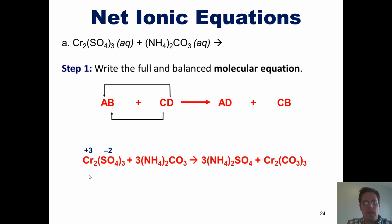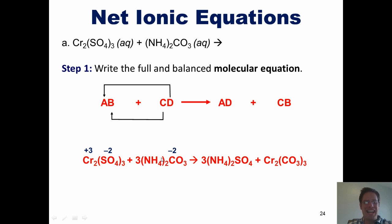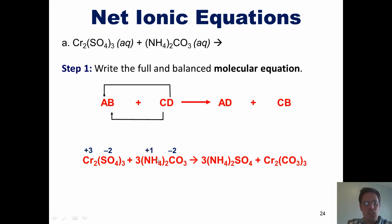Carbonate, CO₃²⁻, also has a charge of negative 2. Ammonium, NH₄⁺, has a charge of plus 1. Each NH₄⁺ has a charge of plus 1, so how many NH₄⁺ ions does it take to neutralize a charge of minus 2? It takes two of them. Hence, we put parentheses around NH₄ and put a subscript 2 next to it.